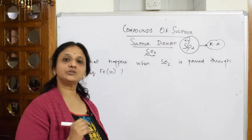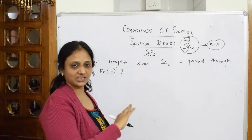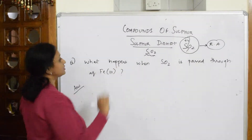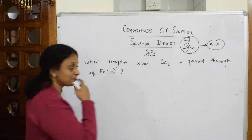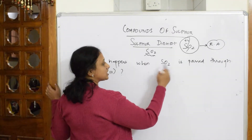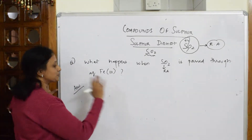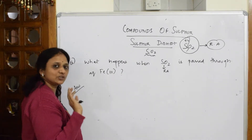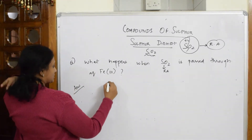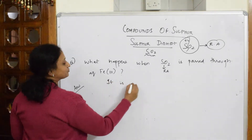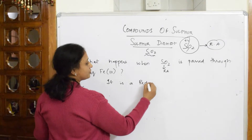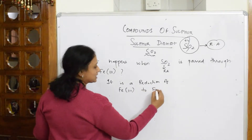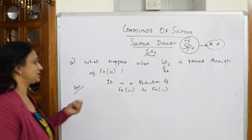The role of a reducing agent is to lose electrons to the next element and itself get oxidized. Now, the question given is: what happens when sulfur dioxide is passed through Fe³⁺? Since sulfur is in the plus four oxidation state, SO₂ must act as the reducing agent. This particular reaction is a reduction of Fe³⁺ to Fe²⁺.